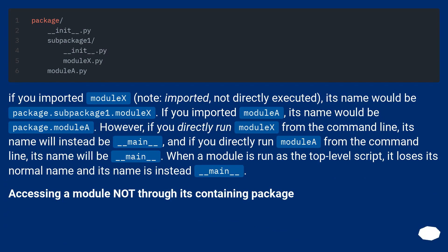If you imported moduleX, its name would be package.subpackage1.moduleX. If you imported moduleE, its name would be package.moduleE. However, if you directly run moduleX from the command line its name will be __main__, and if you directly run moduleE its name will be __main__. When a module is run as the top-level script, it loses its normal name and its name is instead __main__.